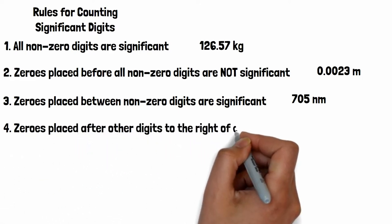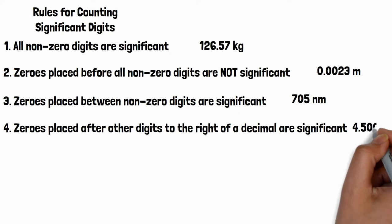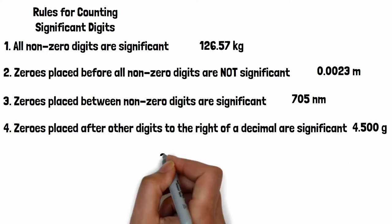Fourth, zeros placed after other digits to the right of a decimal are significant. So this example has four significant digits.